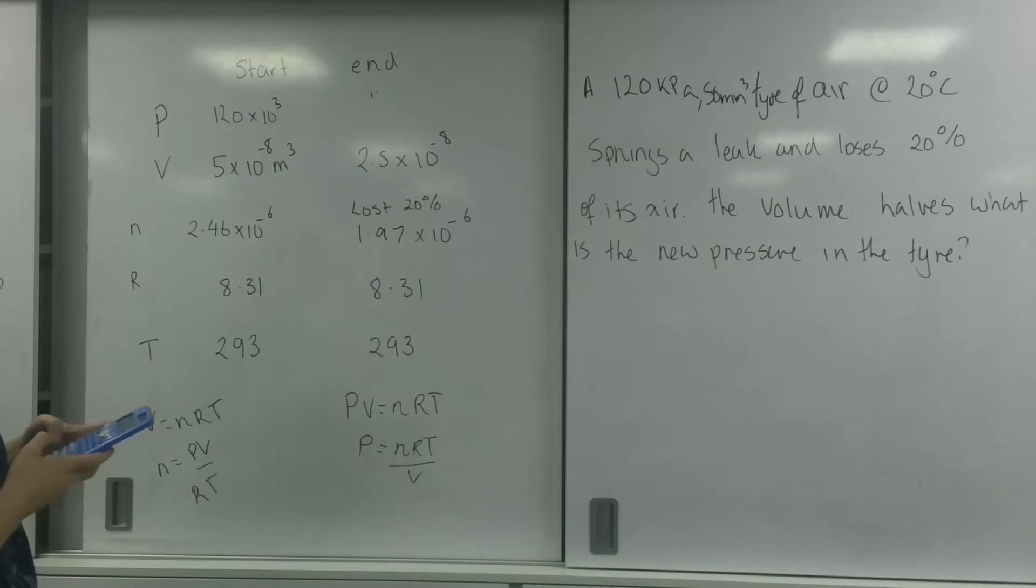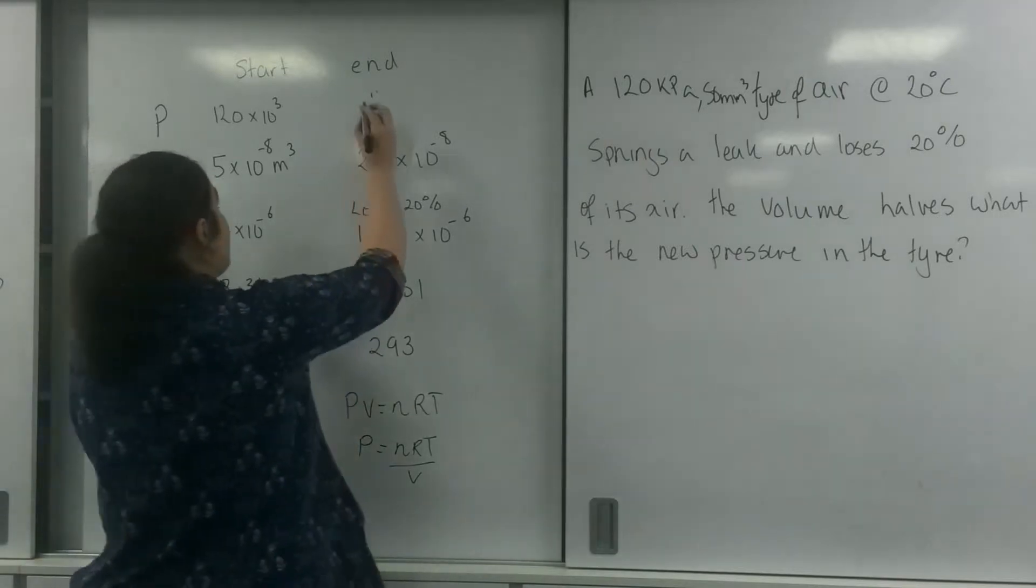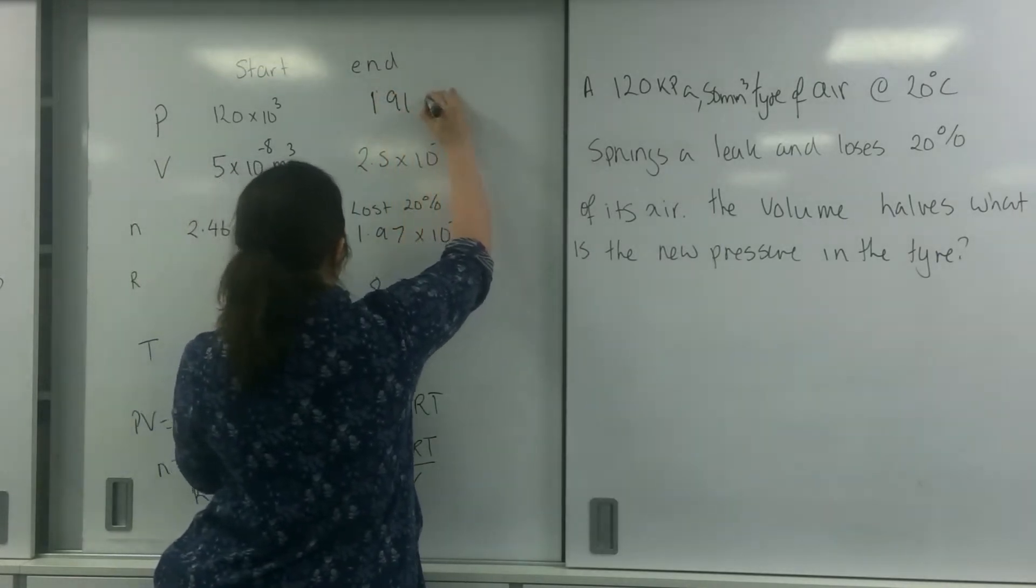I just want to double-check this here. So 2.5 times 10 to the minus 8. 1.97 times 10 to the minus 6 times by 8.31 times by 293, and then that divided by 2.5 times 10 to the minus 8. My new pressure is 191 times 10 to the 3.